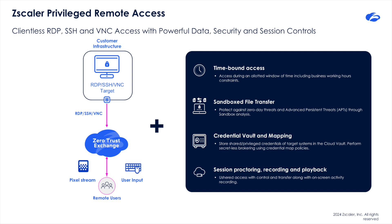OT operators are looking to zero-trust security as a safe and reliable alternative to VPNs. Zscaler Privileged Remote Access is a cloud-delivered zero-trust access solution that enables fast, secure, and reliable connectivity to OT and IoT devices from field locations, the factory floor, or anywhere. Privileged Remote Access, enabled by the ZPA platform, provides remote workers and third-party vendors with clientless remote desktop access to sensitive RDP, SSH, and VNC production systems without having to install a client on unmanaged devices or log into jump hosts and VPNs.